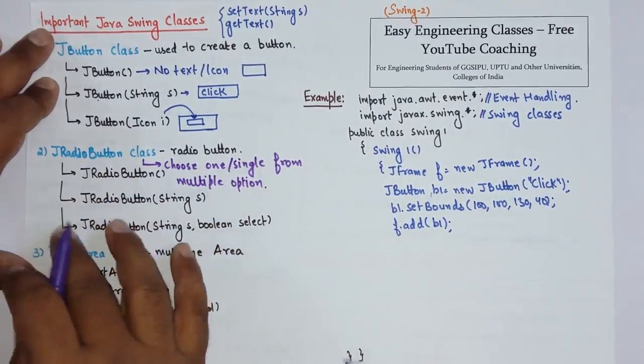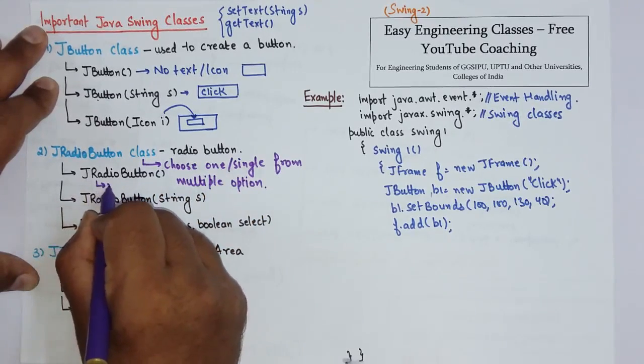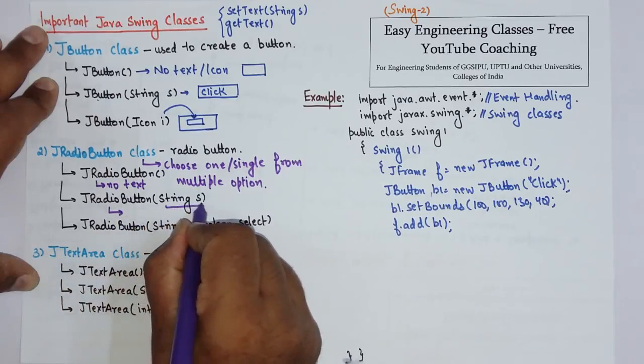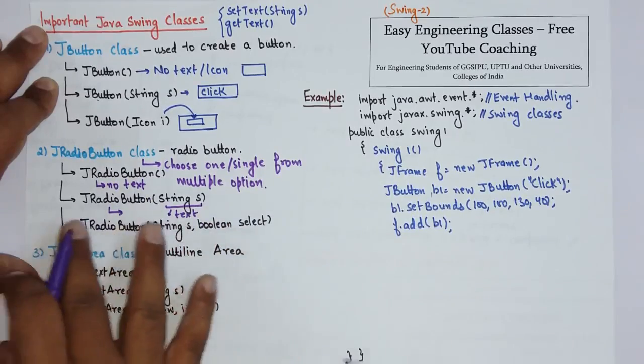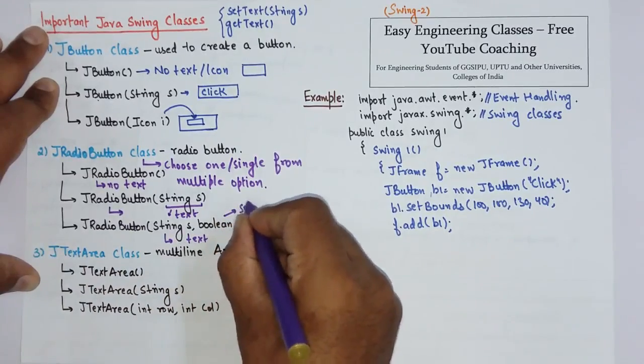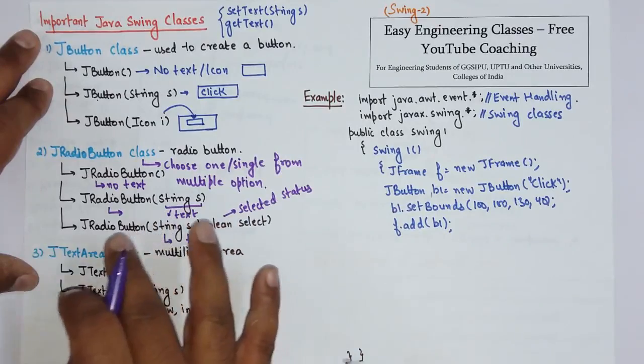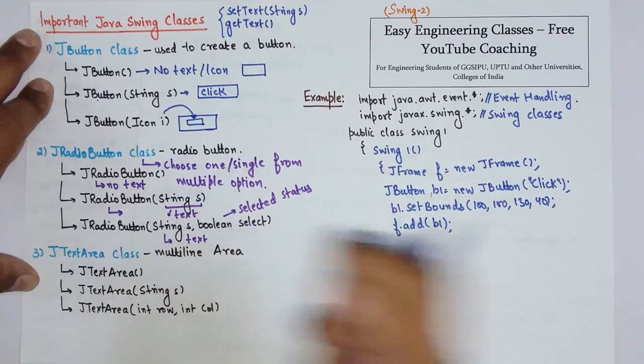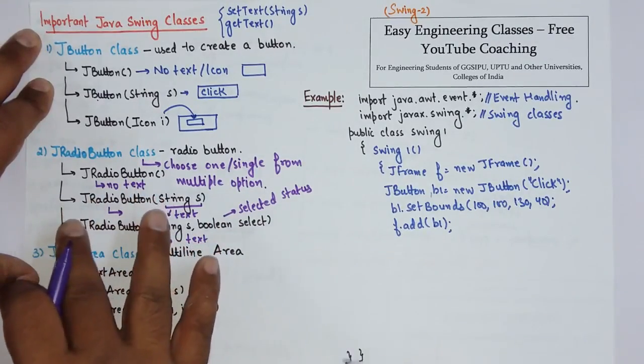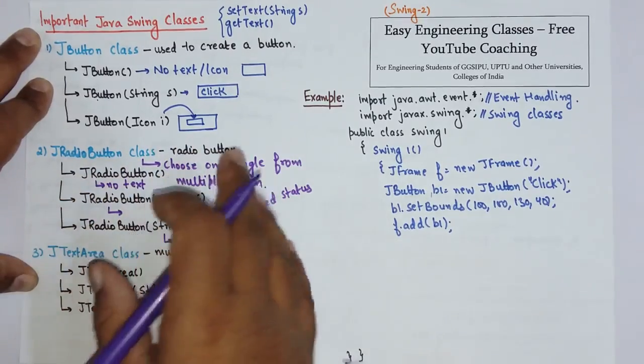There are three constructors basically. First is to create an unselected radio button with no text, so it has no text and it is unselected. Whereas this is used to create a radio button with the specified text here, so this is the text which comes in the radio button. And the third is with text and the selected status. So if it is true the radio button will appear as selected by default, and if it is false the radio button will appear as deselected by default. And there are also different methods of JRadioButton class like setText, getText, enable, etc. You can refer those methods in the documentation.